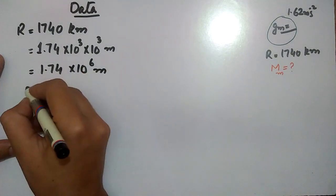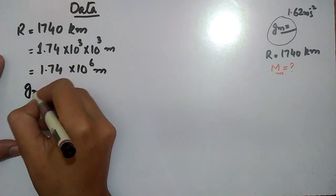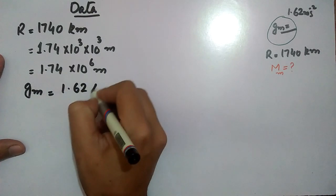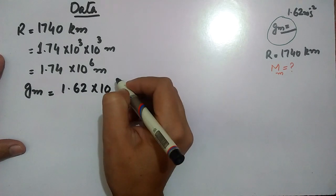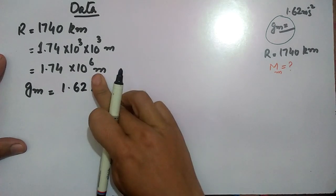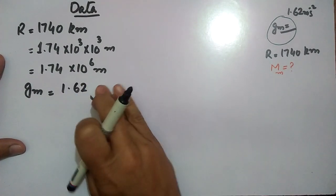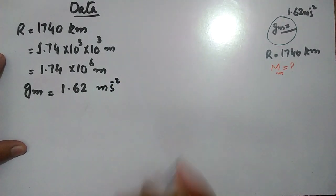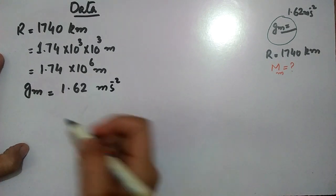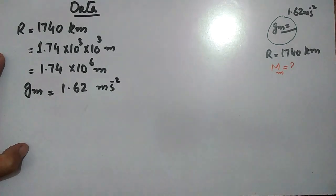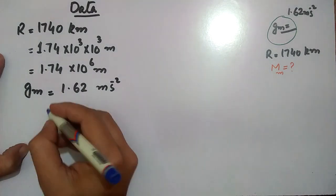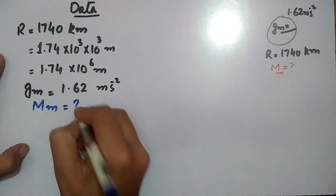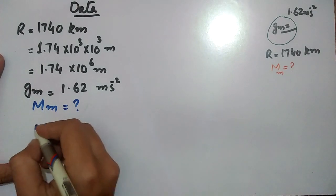Now we convert the gravity on the surface of the moon. The value of gravity is 1.62 meter per second square. This is the gravity value. You need to find out the mass of the moon.